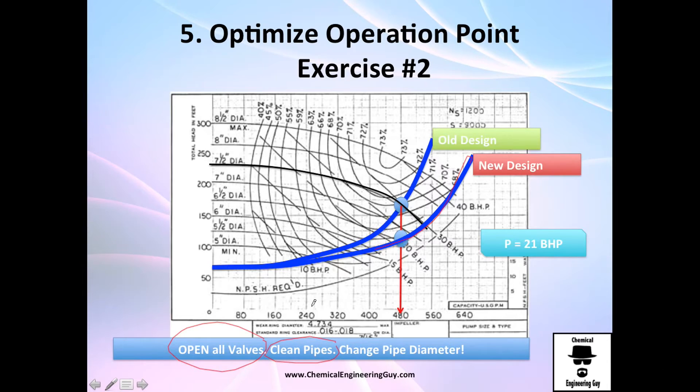Open all valves to that percentage in order to get the system curve right here. You will need to clean pipes in order to decrease the roughness of pipe, and maybe with that you decrease the energy loss due to friction. And if you decrease the energy loss due to friction, you will decrease the head of the system, or change the pipe diameters. If you decrease the velocities due to the change of diameters, you're going to have less energy loss due to friction.